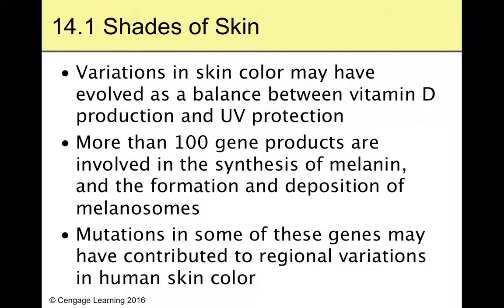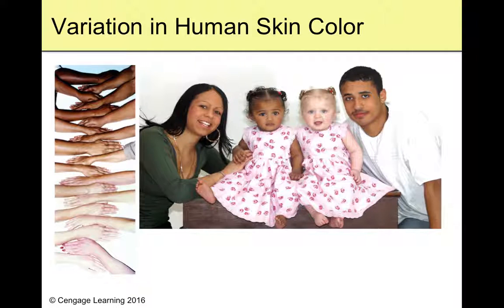More than 100 genes and their products are involved in the synthesis of melanin and the formation and deposition of melanosomes. That's a lot of different genes and gene products regulating exactly how dark you are, and mutations in some of these genes may have contributed to these regional variations in human skin color.